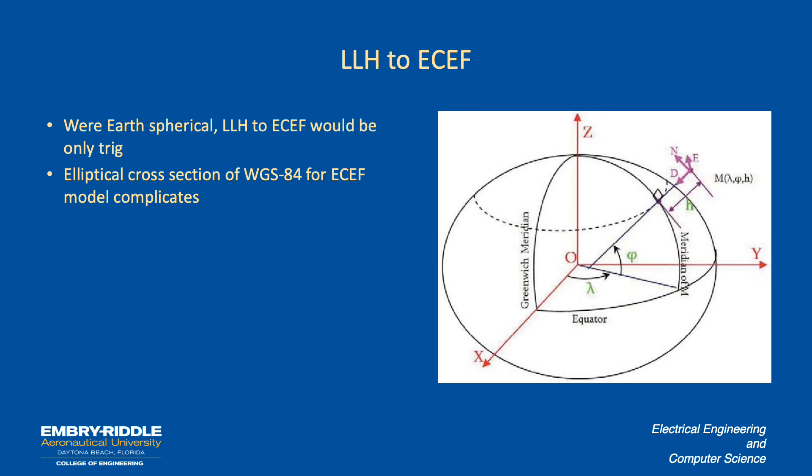So if the earth was spherical, going from lat long and height to ECEF would be only trig. It's the same idea. You would take the cosine of lambda, the cosine of phi to project things down into the x, y plane, and then you take the cosine of lambda to get the projection onto x and the sine of lambda to get the projection onto y.